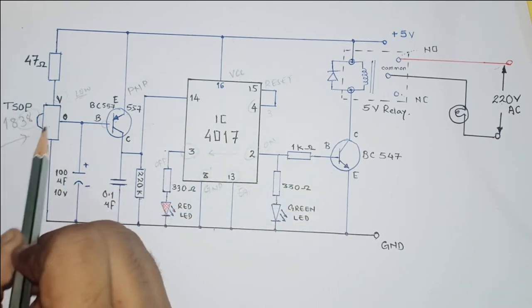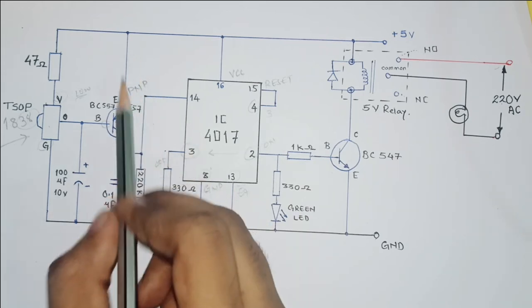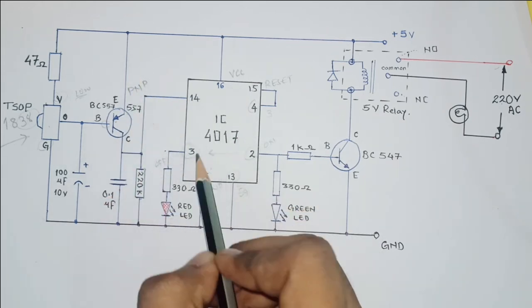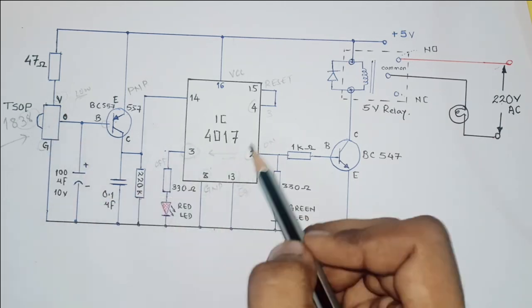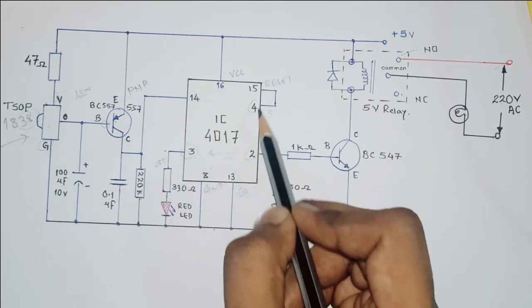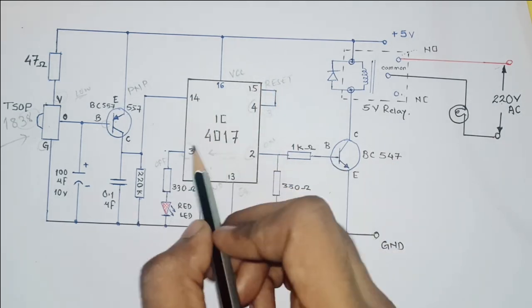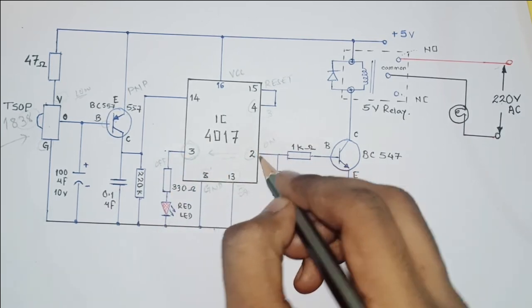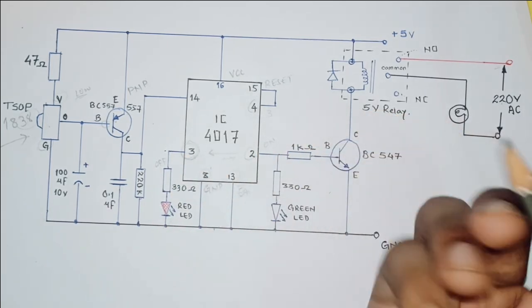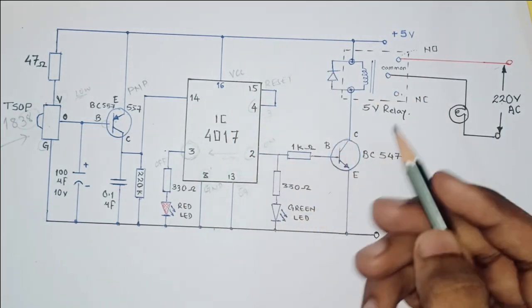When this guy is going to detect some signals, it is going to send it to this, and then pin number 14 is going to get a clock pulse. The output is going to shift to 2. Then again when this is going to get a clock pulse, it is going to shift to 4, and then 4 is going to reset the IC. Then the output goes back to 3 and the device will be off. Now let us see how the lamp is going to turn on or off, or whatever appliance that you are connecting is going to turn on or off.